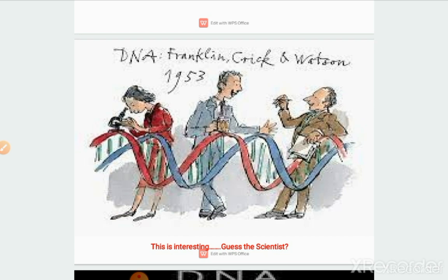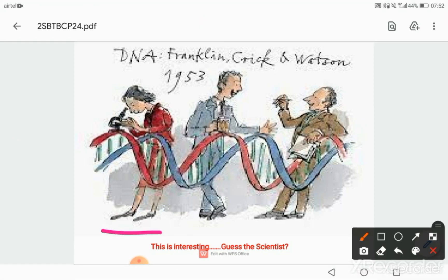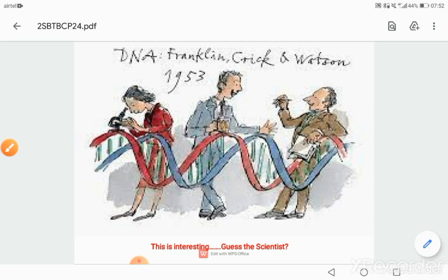Please guess the scientist. Here is the lady — she is Rosalind Franklin, and this is Crick, and this is Watson. These are the people behind the structure of DNA and the important photograph 51. So this is Watson, Crick, Wilkins, and Rosalind Franklin. This is the work of Rosalind Franklin which revealed the idea that the structure of DNA is a helix made up of two strands.